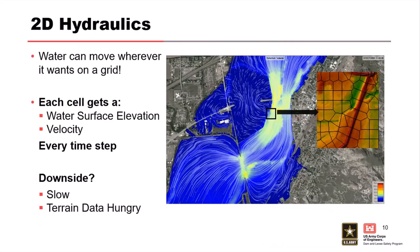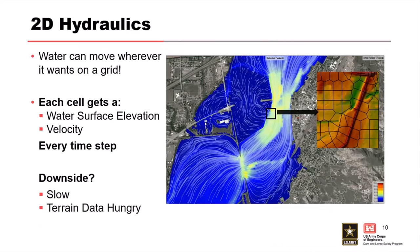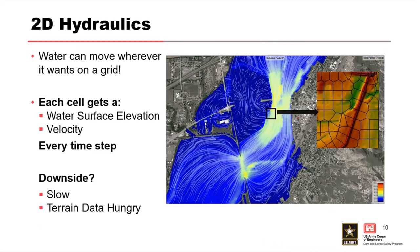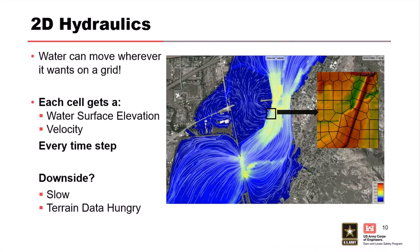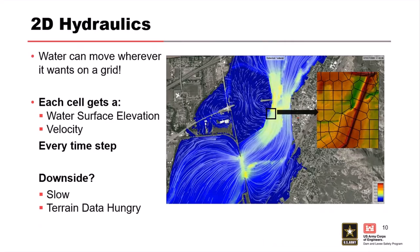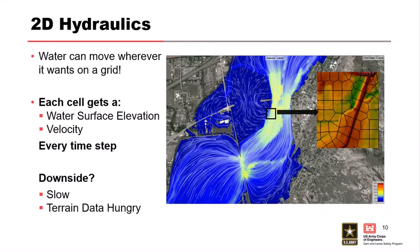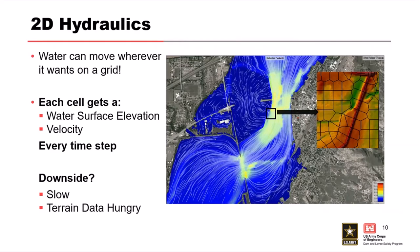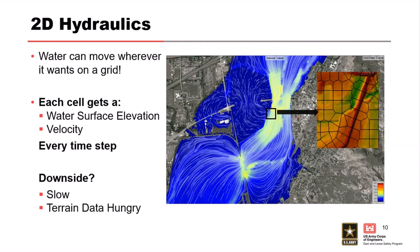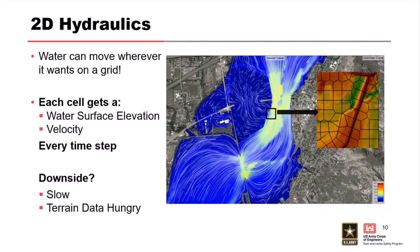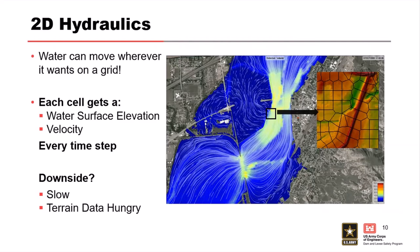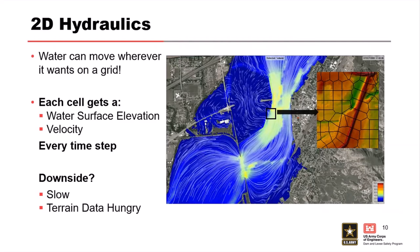2D hydraulics is the answer. We lay out a grid and we let water move from cell to cell — it can go wherever it wants. The animation here is of Glendive, Montana. Once we get up into this area, there's a levee and you can see from the particle tracers that water is kind of spiraling around the thing. That would be tricky with cross sections. We could use a storage area, but then we lose velocity and we could be teleporting water in weird ways. 2D is the answer for this area — it's the best solution.